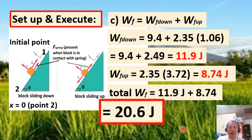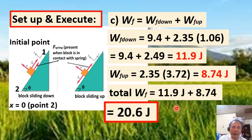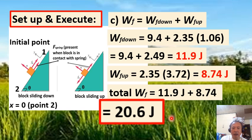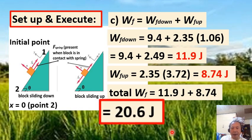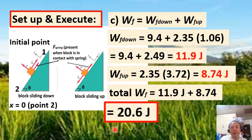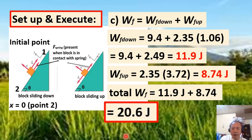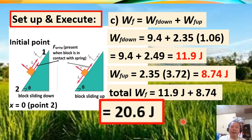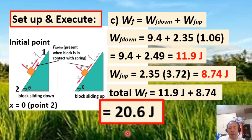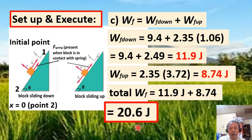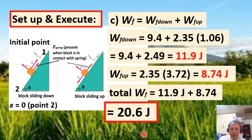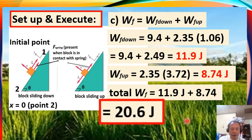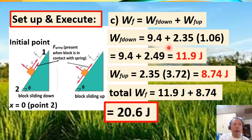So 20.6 joules is the work done by friction, which can be verified by taking the change in total mechanical energy of the block — the difference between the initial and final total mechanical energy. The loss in mechanical energy of the block equals the total work done by friction. That concludes our video lesson for this topic.